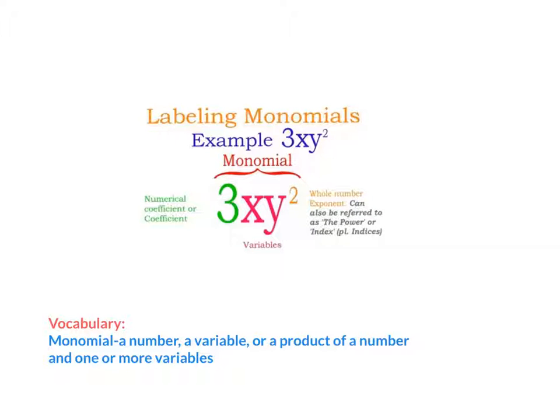A monomial is a number, a variable, or a product of a number and one or more variables. My example of a monomial is 3XY squared. The giant number 3 is the coefficient. The X and the Y are my variables or my bases. The 2 is my exponent.